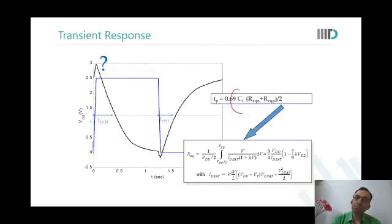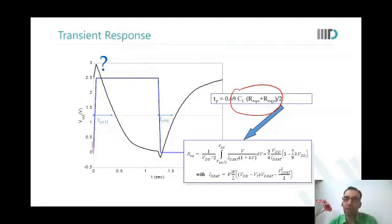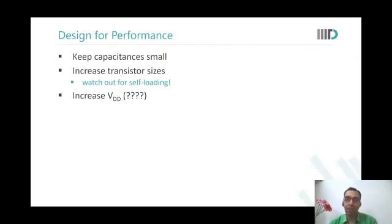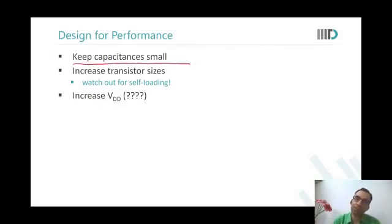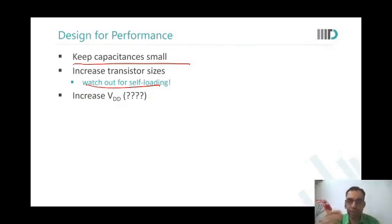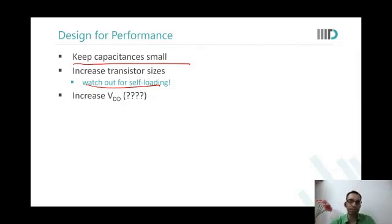The formula is CL times R. If you keep the load capacitance small, delays improve. We know that the drain of the NMOS and PMOS also contribute to load capacitance, so keeping self-loading small helps. If you increase device sizes, R_on of the PMOS and NMOS decreases, improving delays. But as you increase size, the diffusion capacitance also increases — this is called self-loading. You cannot keep increasing size indefinitely; after a point you reduce R_equivalent but capacitance also increases, making it self-defeating.